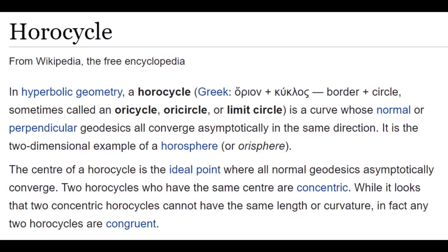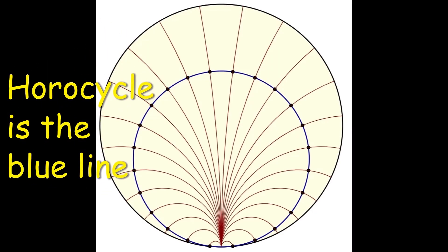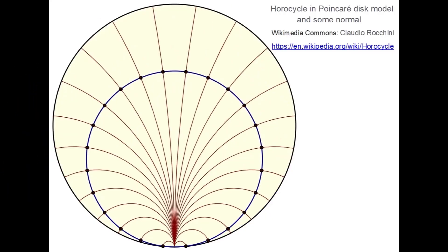Horocycle, or limit circle, is a curve whose perpendicular geodesics all converge asymptotically in the same direction. Horocycle is the blue line.